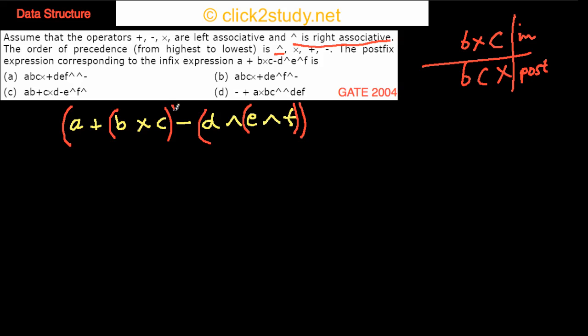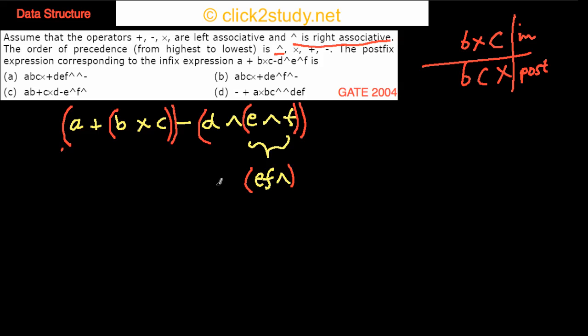We give higher precedence to the plus, adding its parentheses first, then the final outer parenthesis for the minus. Now we start converting the innermost parenthesized sub-expressions into postfix one by one — since those are the most deeply nested, we write them out in postfix form, moving D out after its operator.